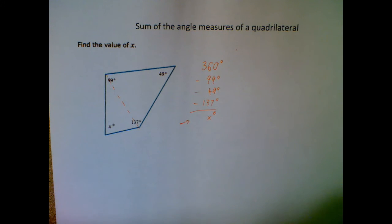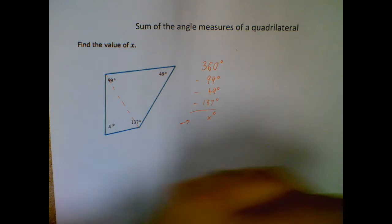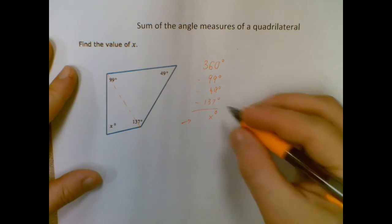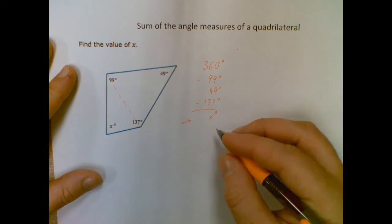Okay, so I'll just go ahead and grab a sheet of paper or a calculator, whichever you are using, and 360 minus 99 minus 49 minus 137, and that leaves us with a total of 75.